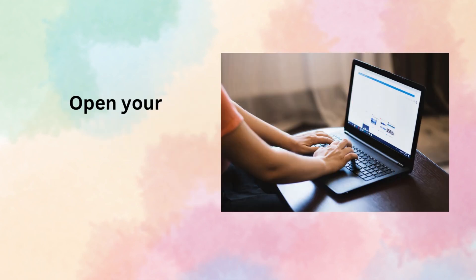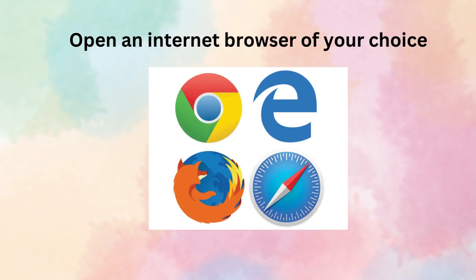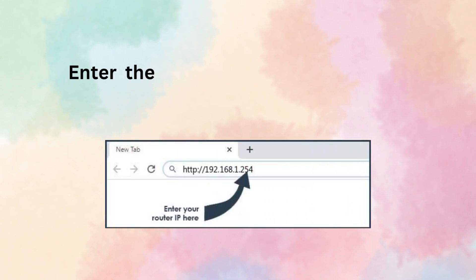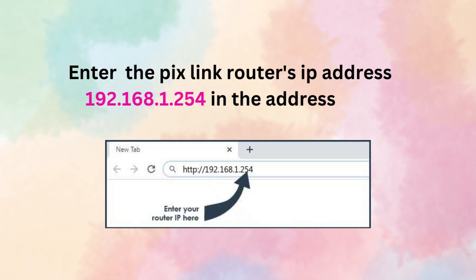Open your computer or laptop and open an internet browser of your choice. Enter the PixLink Router's IP address 192.168.1.254 in the address bar.